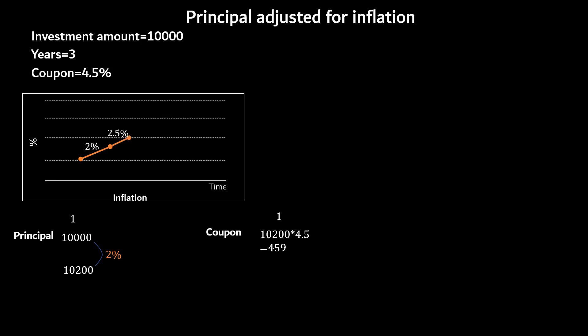In the next year, if the inflation goes to 2.5%, the adjusted principal value will be 10,455. And accordingly, the coupon amount equals 470.5. Similarly, there will also be a type where the principal amount is fixed and only coupons are adjusted for inflation.